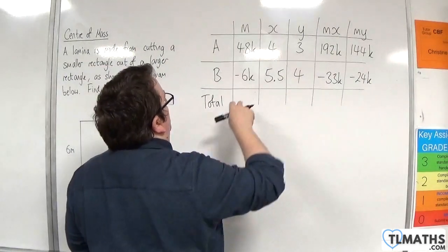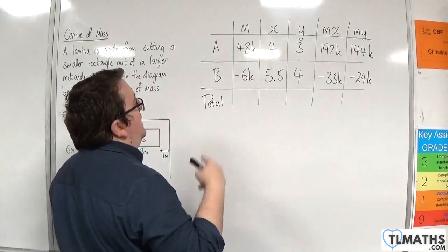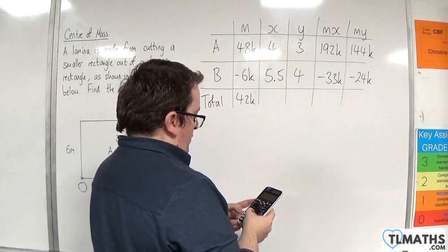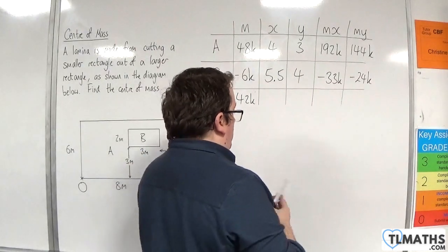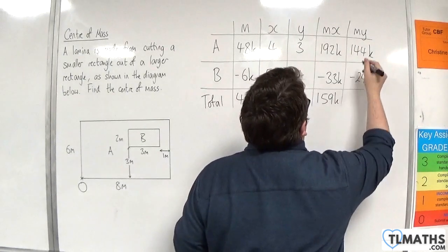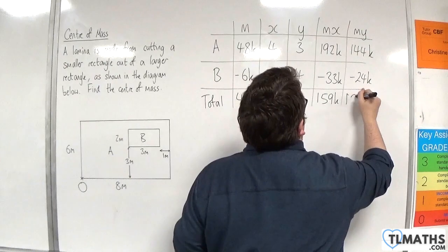So, total mass that we have is 48k, take away 6k, so 42k. We've got 192, take away 33k, so 159k. And then minus 24k, so 120k.